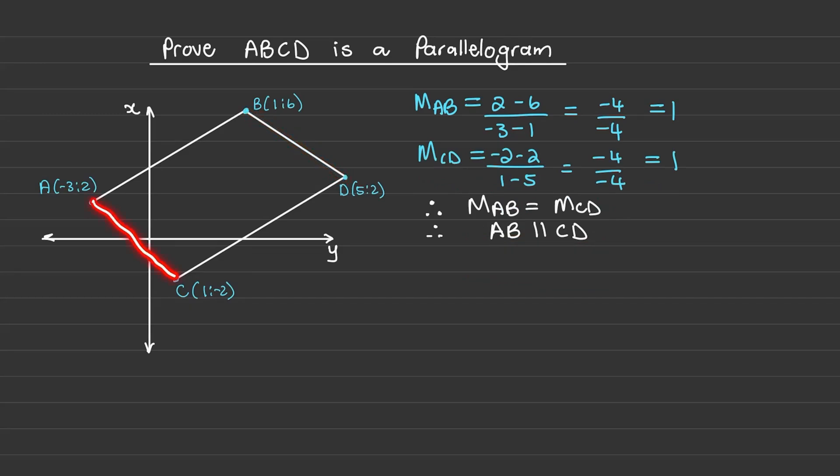Next I'll find the gradient of BD and the gradient of AC. Now I have found the gradient of line AC to be negative 1 and the gradient of line BD to be equal to negative 1. Therefore I can conclude that the gradient of AC is equal to the gradient of BD and therefore the line AC is parallel to the line BD.